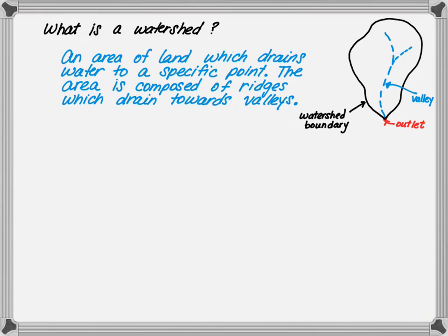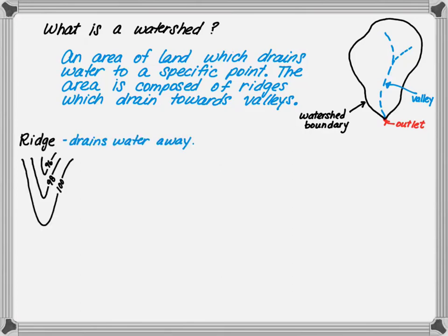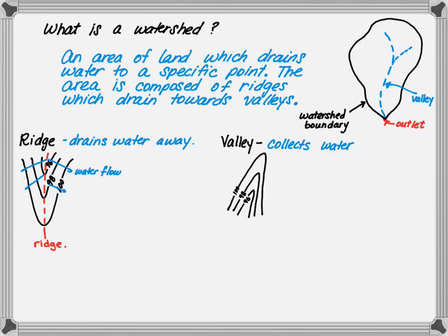The boundary of the watershed is actually located along the outermost ridge of the watershed. Ridges drain water away from the center of the contours. The sample contours show that the ridge is marked in a red line, causing the water to flow away from the center. Valleys, on the other hand, drain water towards the center. The sample contours show the valley marked in red and cause water to go towards the center.